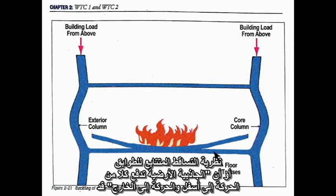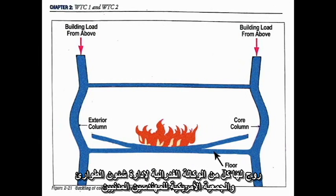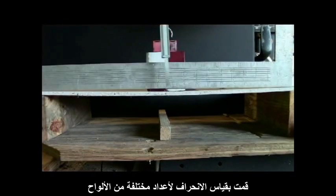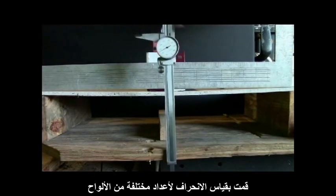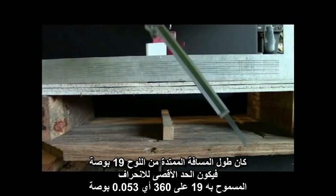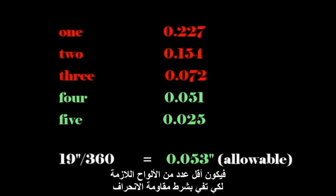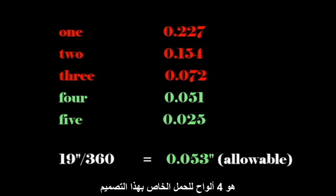The pancake theory, where gravity drives both the down and out motions, was promoted by FEMA and the American Society of Civil Engineers. PBS showed a computer model demonstrating how floors would continually fall down. To test this, I used cement-type planks and a solid steel block weighing about 20 pounds. The plank span is 19 inches, and the maximum allowable deflection is therefore 19 divided by 360, or 0.053 inches. The minimum number of planks needed to meet deflection criteria would be 4 planks for that particular design load.